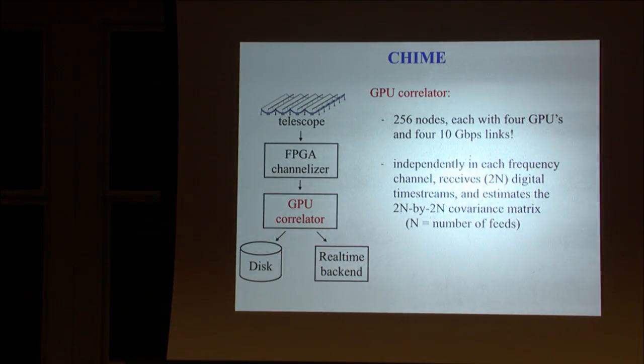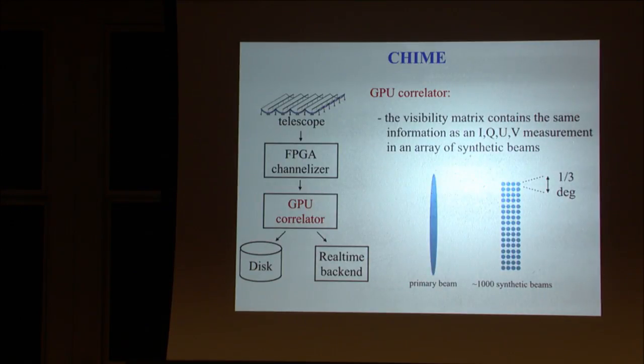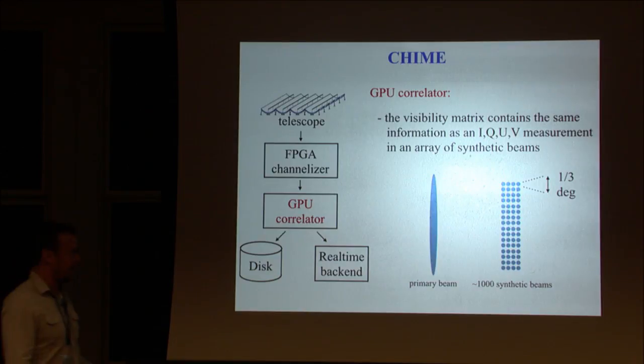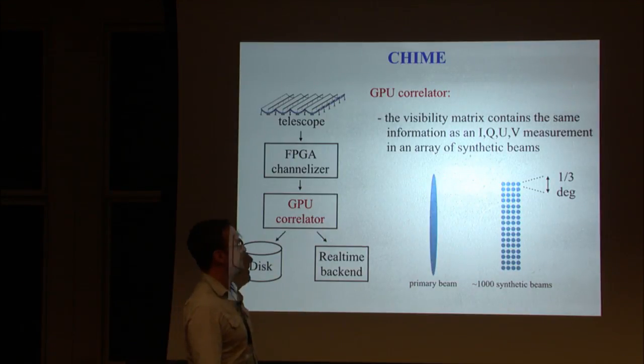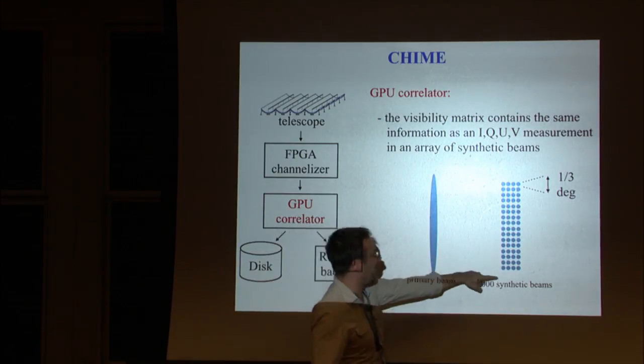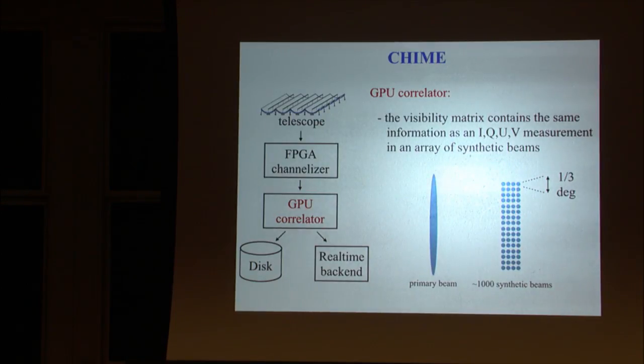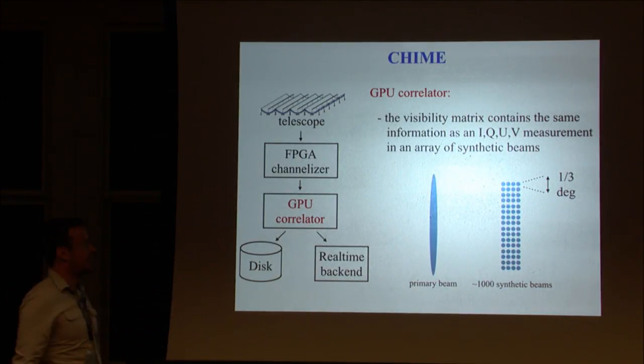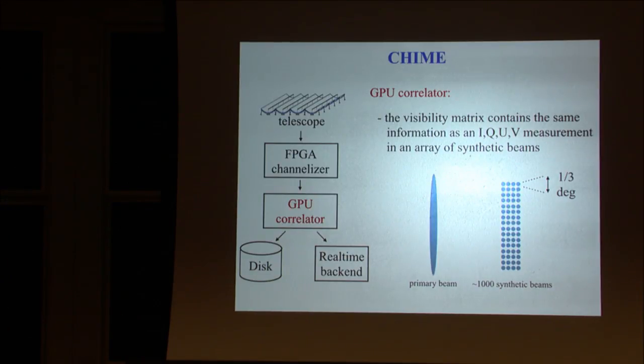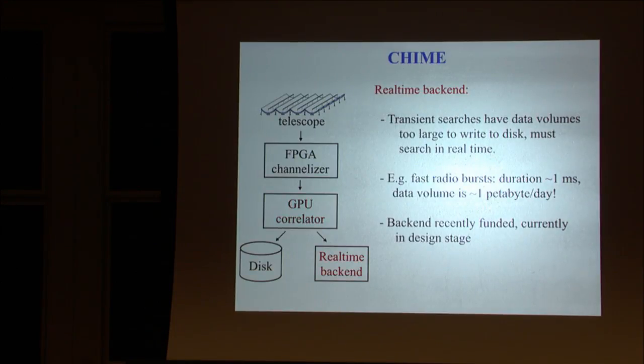Those are transposed and go to the GPU correlator. Each GPU in this correlator receives one frequency channel at all antenna locations. Then we compute all correlations. We compute the 2N by 2N covariance matrix of the feeds, which is what's called the visibility matrix. If you're not used to interferometry, the information in that matrix is equivalent to having order a thousand synthetic beams on the sky with a fully polarized measurement. By assigning appropriate delays in software to the feeds, you can synthesize a beam anywhere in the sky.